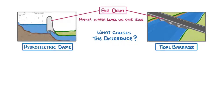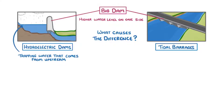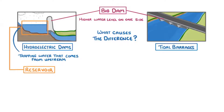In a normal hydroelectric dam, we're just trapping the water that's come from upstream, and preventing it from continuing its journey towards the ocean. If we do this for long enough, we end up accumulating a huge amount of water, which we call a reservoir, which basically looks like a big lake.